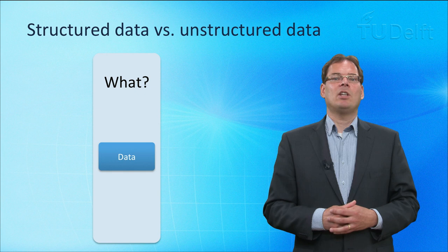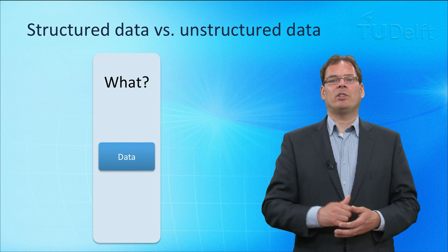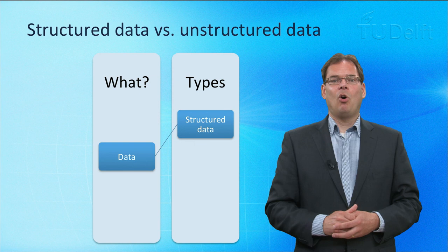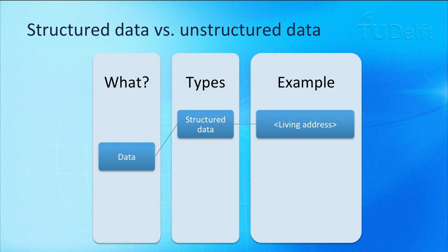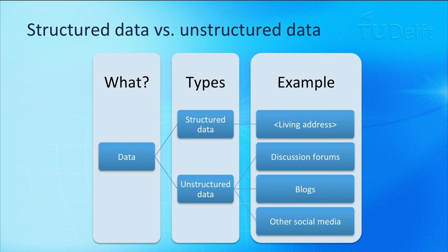The amount of available data grows, both structured and unstructured. Structured data is stored using predefined attributes, often in databases. An example is your address information having a certain format — it includes a street name, a street number, a zip code and a place of residence. In contrast, unstructured data has no structure in advance. Examples are discussion forums, blogs and other social media.